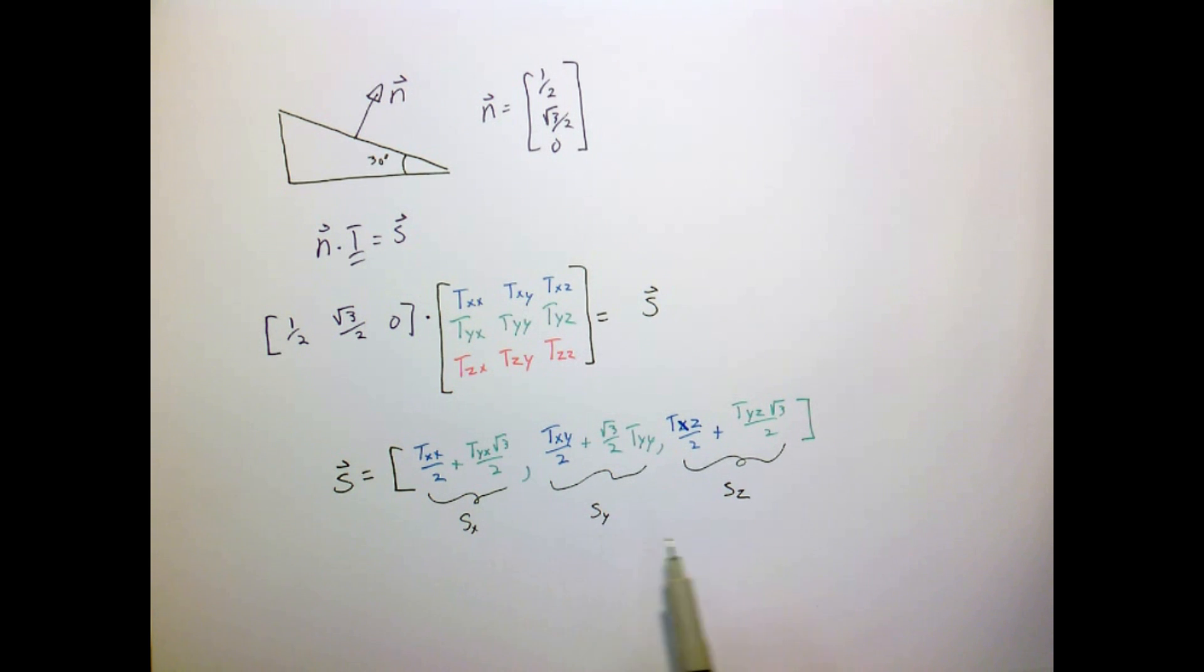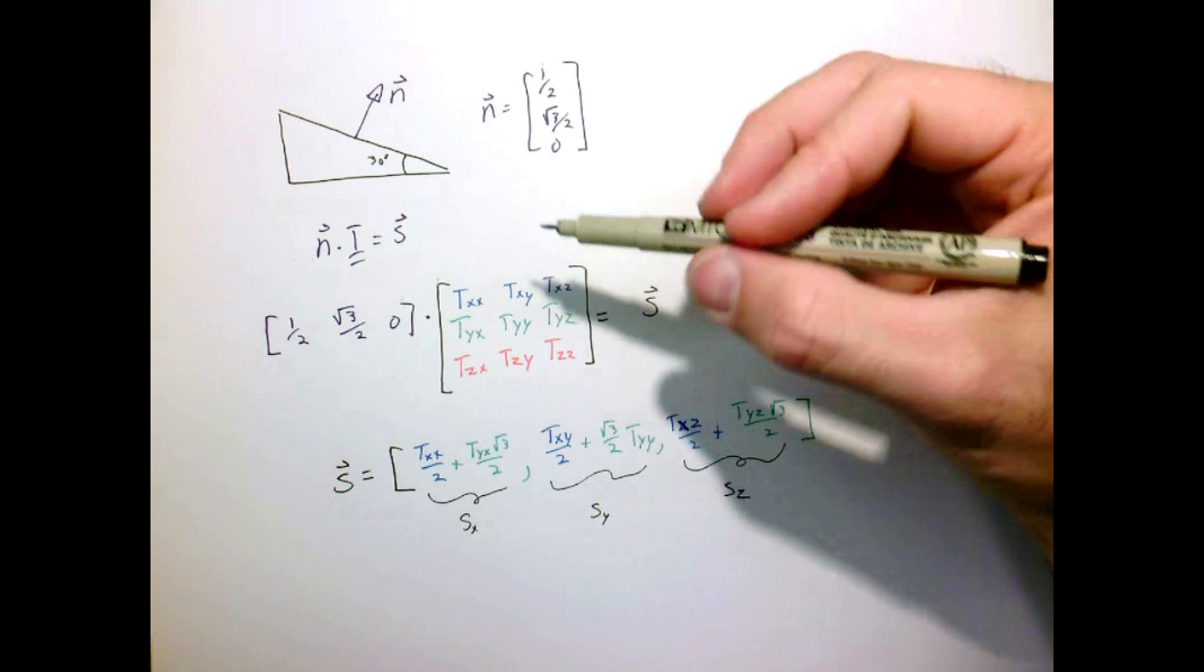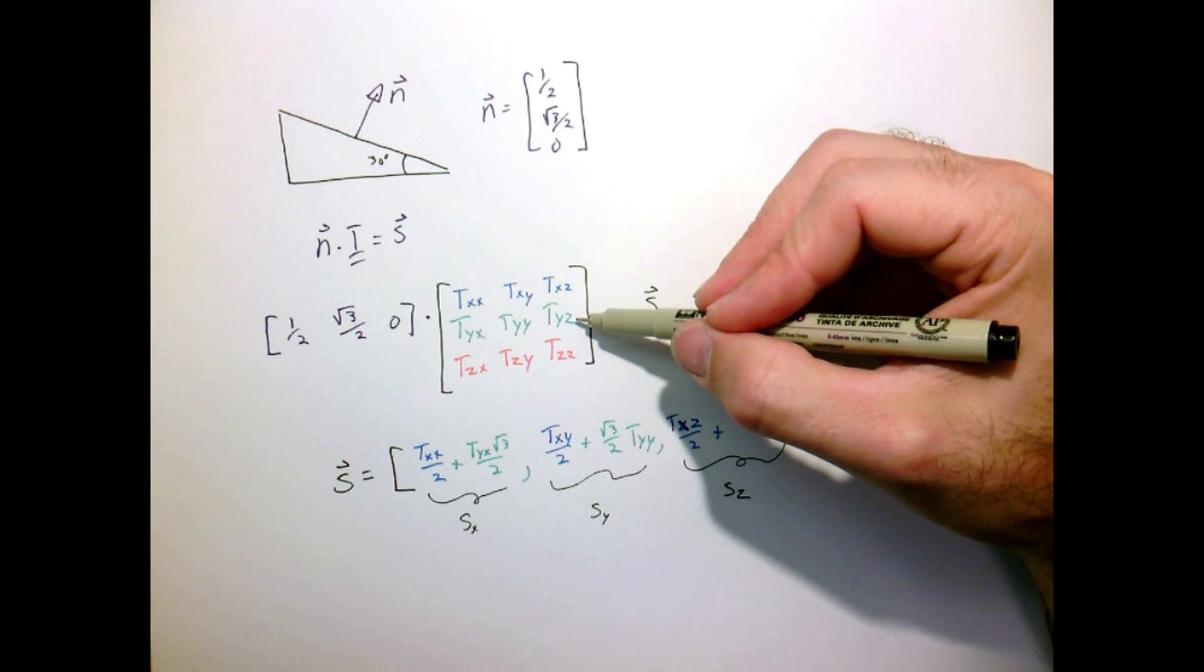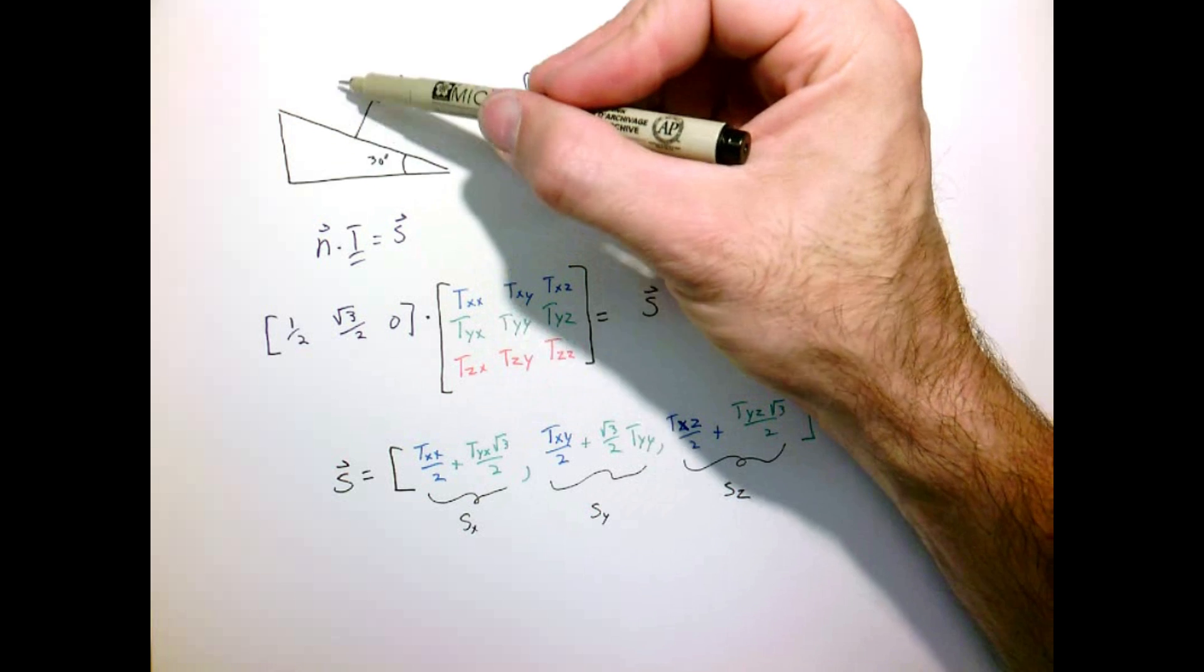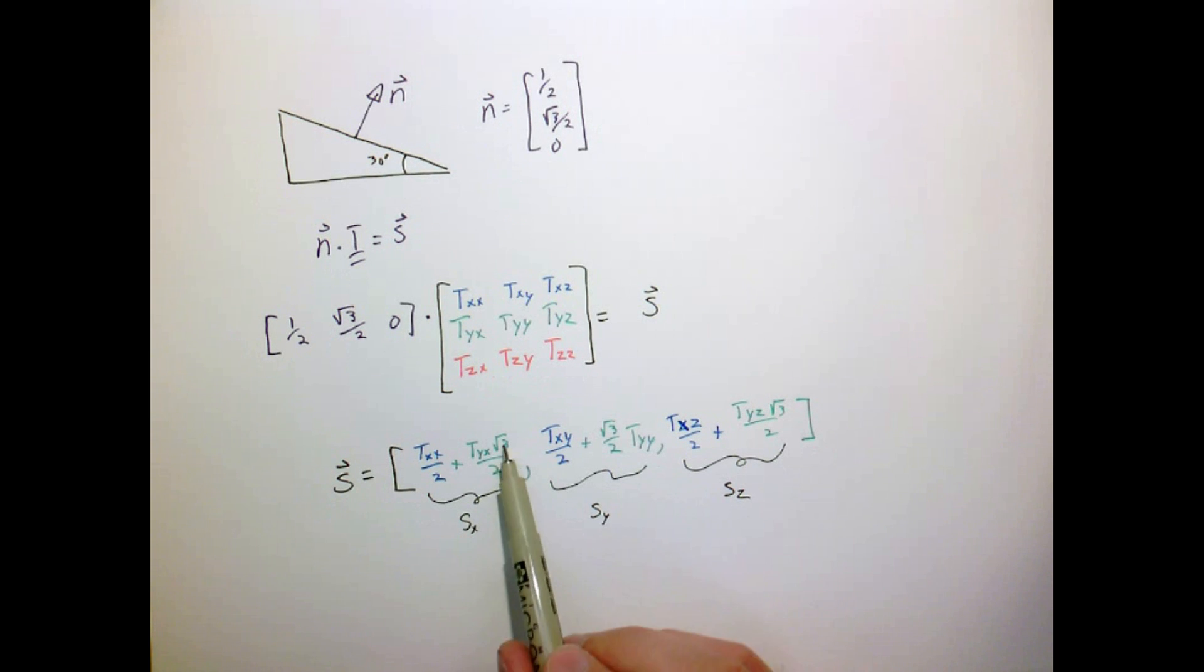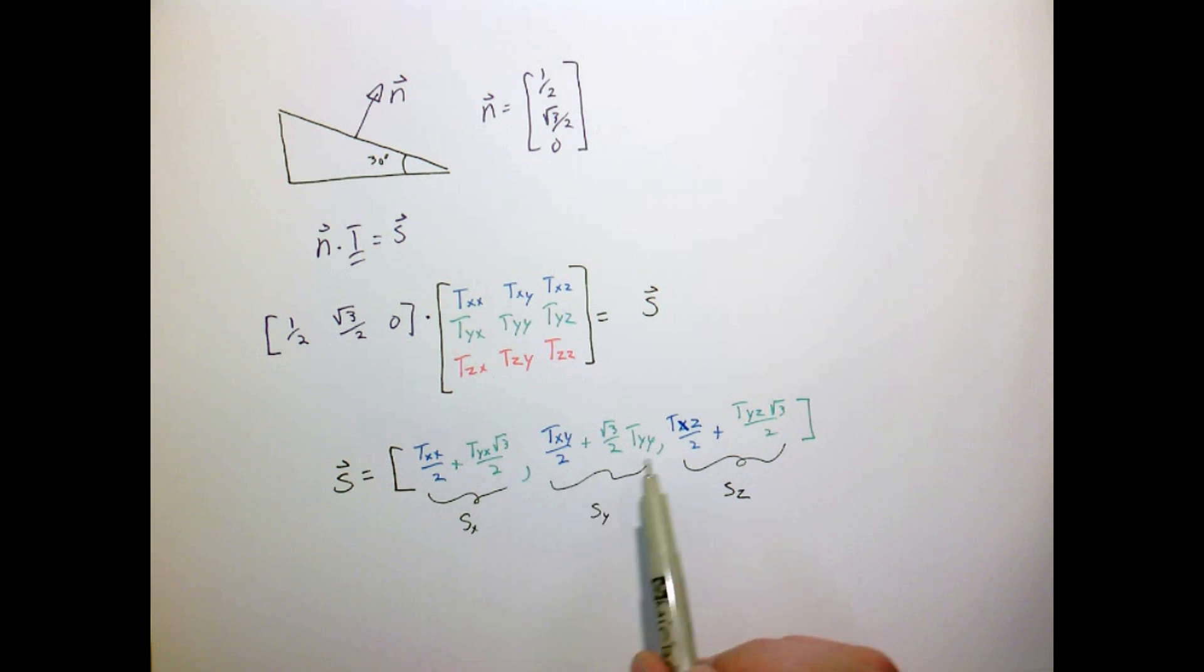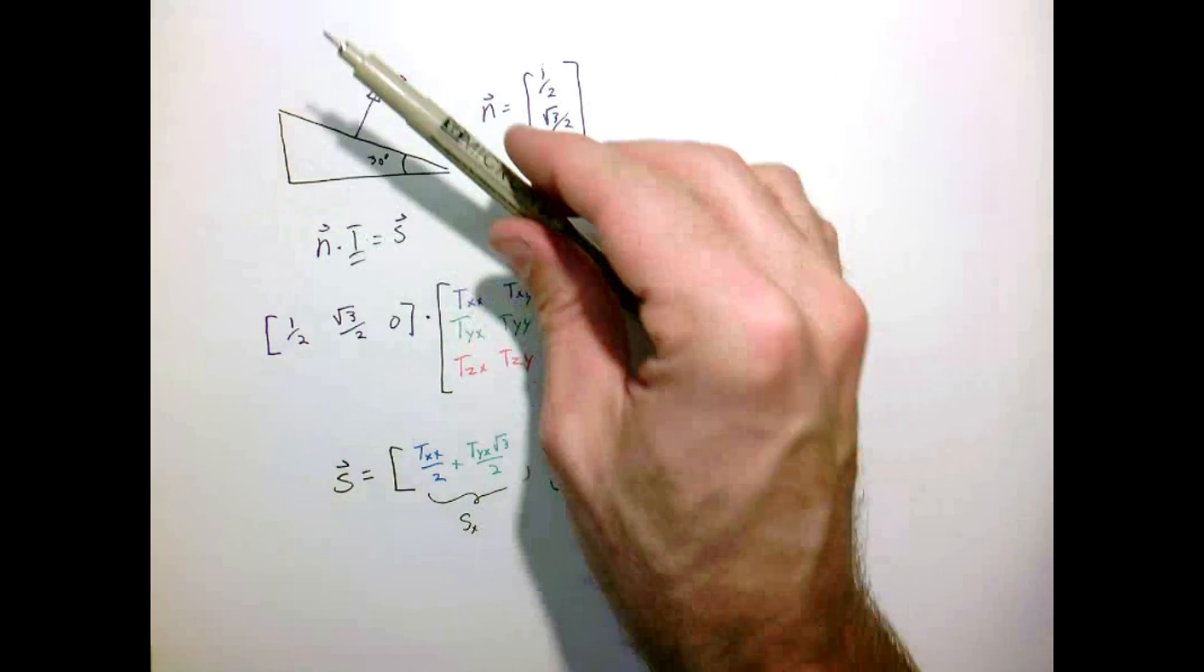So we get a vector where the x, y, and z components are starting to mix the values from the stress tensor, which are acting on the x-face and the y-face. And you can see that since our normal vector is closer to the y-normal vector, we're sort of weighting those stresses more by a factor of square root of three over two than the ones that are pointing in the x-direction.